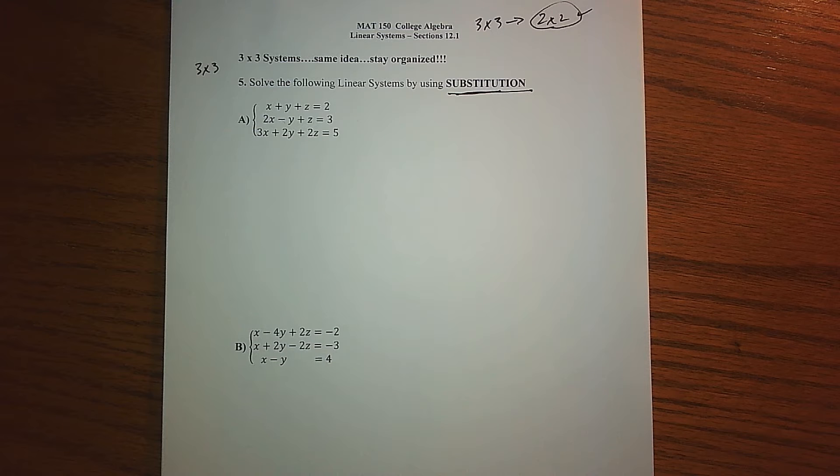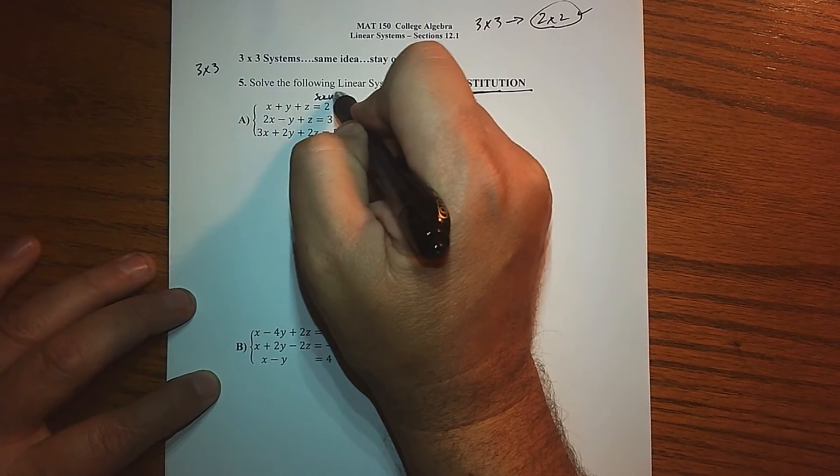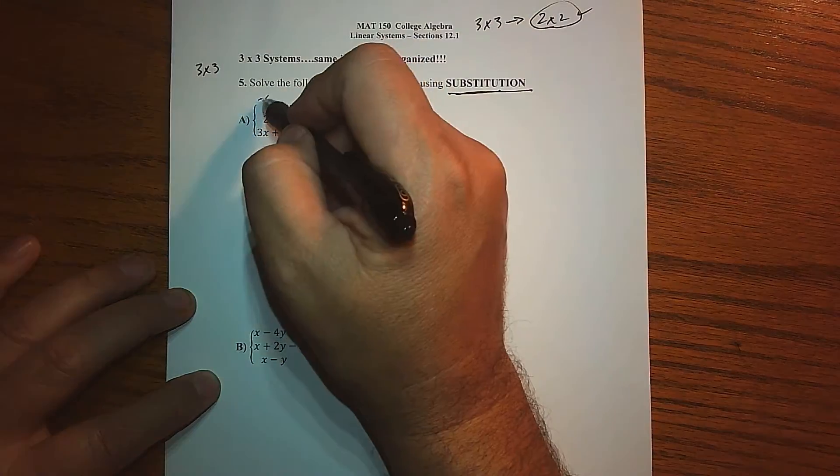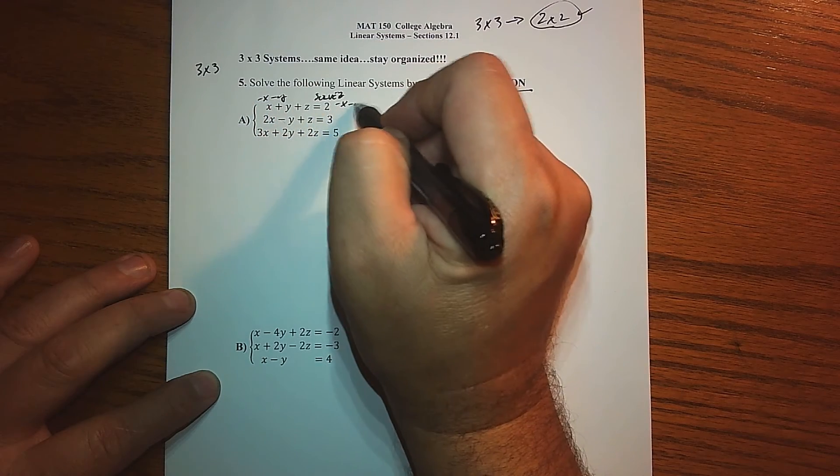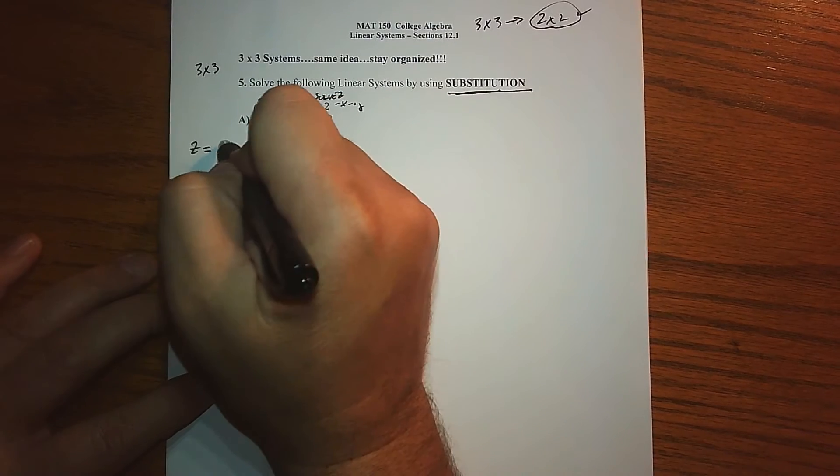I think what I'm going to do is I'm going to take this equation and solve it for Z, because it's very easy. I just subtract minus X and minus Y from both sides, so Z is basically 2 minus X minus Y.